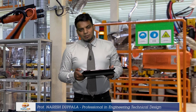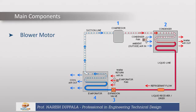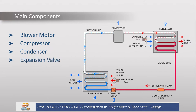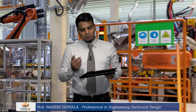Let's discuss about some of the main components and then see how they can be symbolized in the layouts: blower motor, compressor, condenser, expansion valve, filter dryer, and evaporator. As you can see in the diagram, the fluid goes from the compressor to the condenser, helped by the condenser fan, then to the liquid receiver and dryer, then to the expansion valve, and then to the evaporator which has a blower next to it as well.